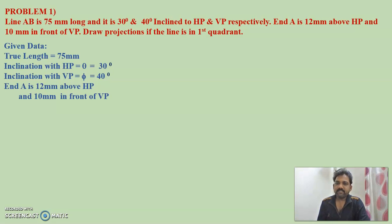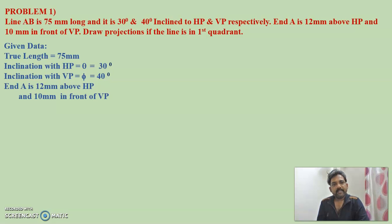Let's write the given data. Line AB is 75 millimeters long — so the true length is 75mm. It is inclined at 30 degrees to HP, so theta equals 30 degrees, and 40 degrees inclined to VP, so phi equals 40 degrees. Point A is 12 millimeters above HP and 10 millimeters in front of VP. We have five data: true length, inclination with HP, inclination with VP, and the two position values of point A.